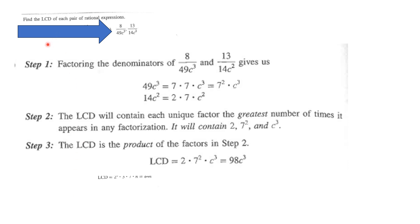Let's begin by considering an example. We're going to find the LCD of each pair of rational expressions. In this first example, we look at 8 over 49c cubed and 13 over 14c squared. Following step 1, factoring the denominators: 49c cubed is equal to 7 times 7 times c cubed, that's 7 squared times c cubed. And 14c squared is equal to 2 times 7 times c squared.